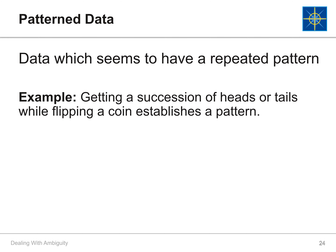Finally, patterned data generates information which is based on repeated sequences of events. At first glance, the data seems to have a repeated pattern. For example, getting a succession of heads or tails while flipping a coin may create a pattern, yet it does not establish a guaranteed pattern for the next set of coin flips.